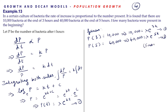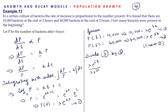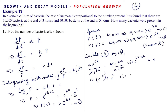Dividing equation 3 by equation 2: lambda·e^(5k) divided by lambda·e^(3k) equals 40,000/10,000. This gives e^(5k−3k) = 4, so e^(2k) = 4 = 2². We can write this as (e^k)² = 2², from which e^k = 2. Let us take this as equation 4.